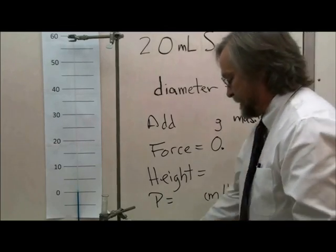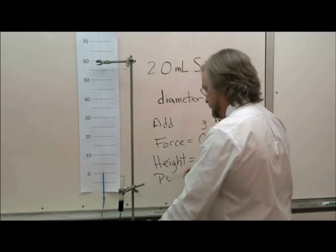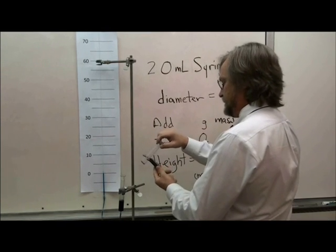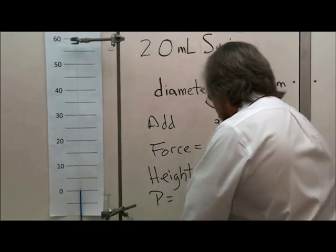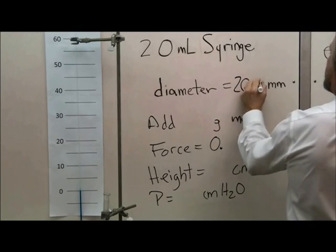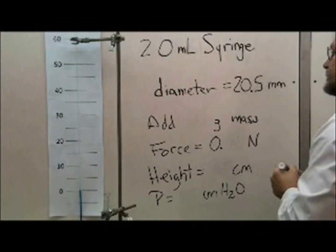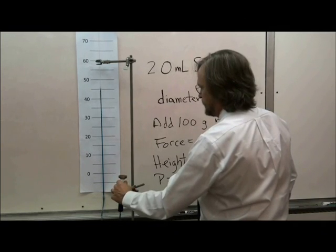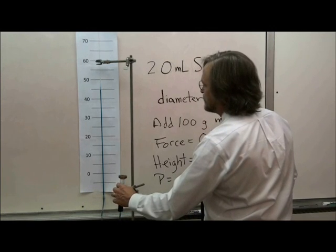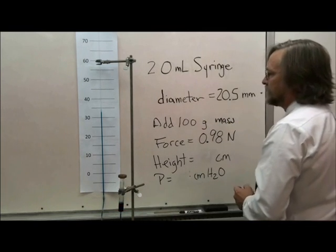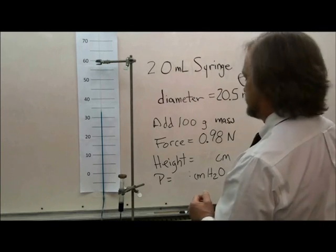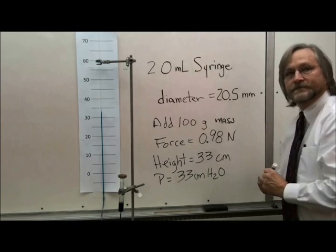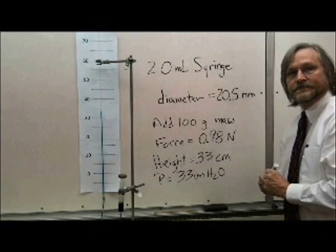Let's repeat the experiment with a larger syringe. A 20 milliliter glass syringe has a thicker plunger, so the end of the plunger has a larger area. Since pressure is equal to force divided by area, we would expect that the force exerted by placing a mass on this syringe would exert a smaller pressure. In this case, the syringe has a diameter of 20.5 millimeters. When I place a 100 gram mass on the larger 20 milliliter syringe, the force is spread out over a larger area, so a smaller pressure is created. After the system reaches equilibrium, the water has risen 33 centimeters, so the pressure inside is equal to 33 centimeters of water.